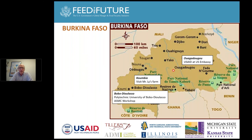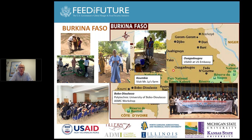In Burkina Faso, Ouagadougou is the capital where we have connections with the USAID mission. We are connected with the Polytechnic University of Bobo-Dioulasso — our main connection there. Our field hub is located at a farm in Kombia, owned by someone we call Mr. Lai, and we are very active on that farm. We had 80 participants in our workshop including about 20 women, which was fantastic.